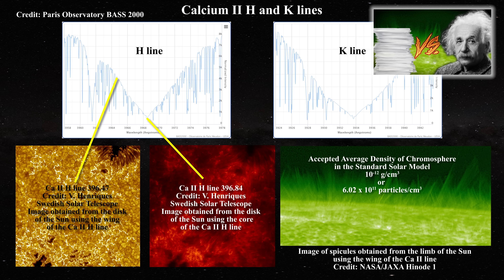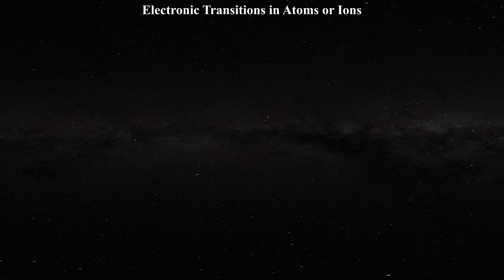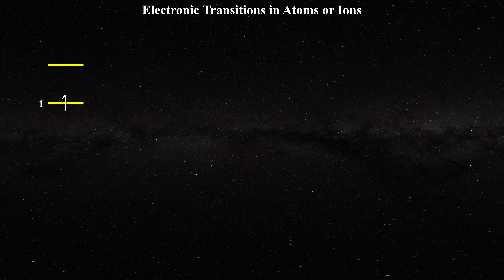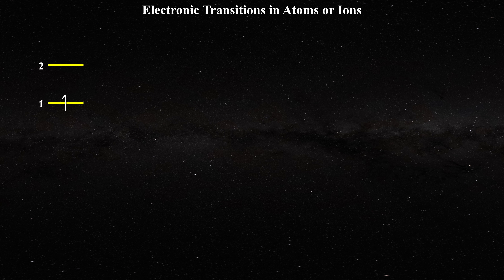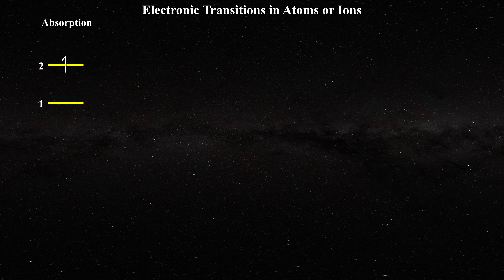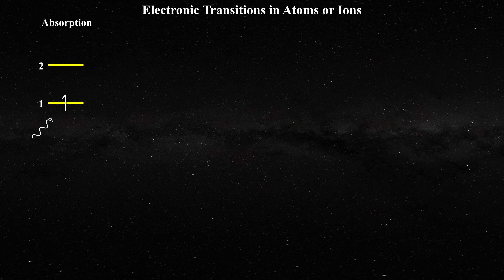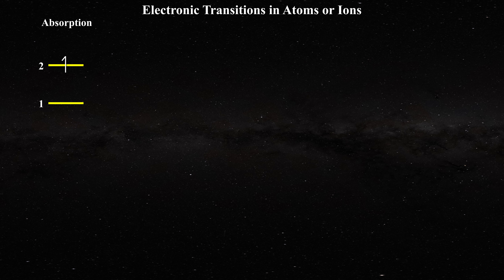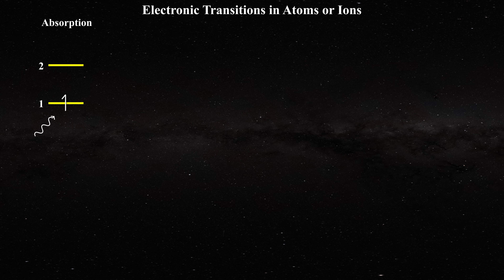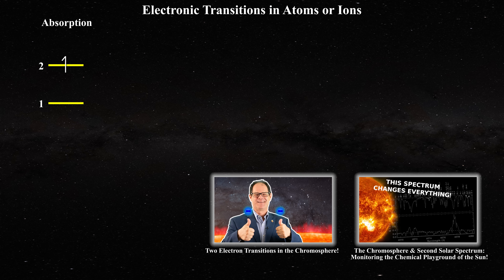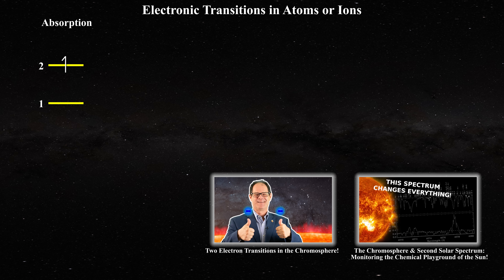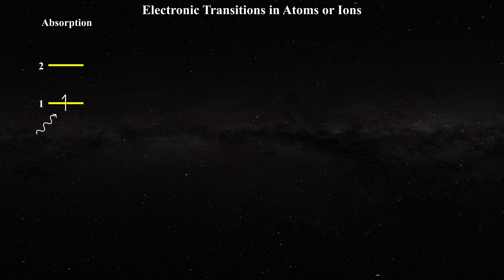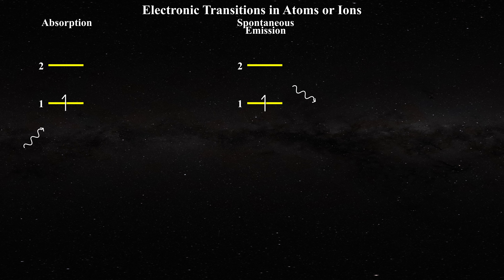Now before we jump into the group 2A elements we need to discuss how an ion responds to incoming radiation. Let us use a simple illustration for the transitions between a lower energy state labeled 1 and a higher energy state labeled 2. Let us assume that a photon is absorbed while the ion is in the lower energy state 1. The absorbed photon can be characterized by a specific incoming direction, frequency, and polarization. When a photon is absorbed, an electron will be promoted to the higher energy level 2.